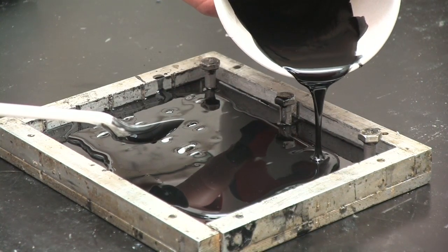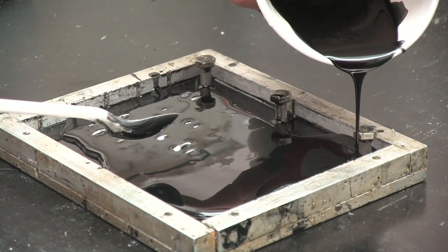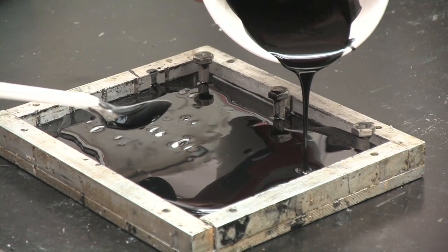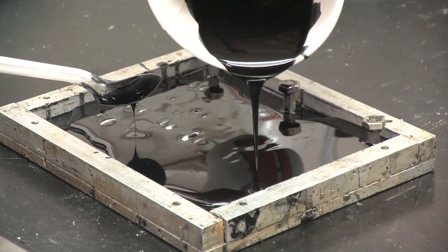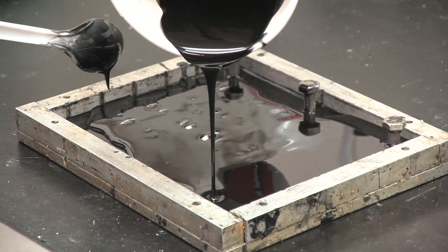Once the otoliths have a good cover on them, you can continue spooning or pour out the rest of the resin so that it fills up the corners and brings the level of the resin up to the edge of the tray.